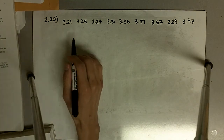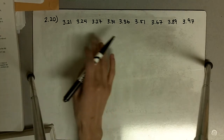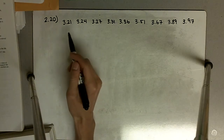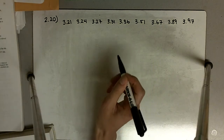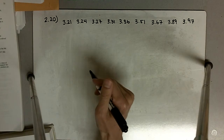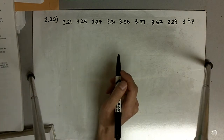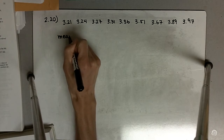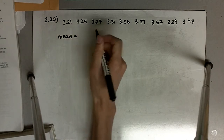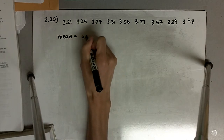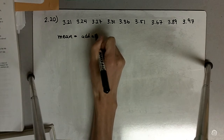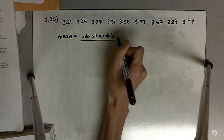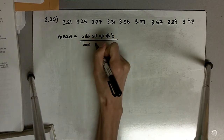I've already copied the nine numbers onto our workboard here, and I've arranged them from smallest to largest. That will help us in determining the median in the next part. But first, for the calculation of the mean,